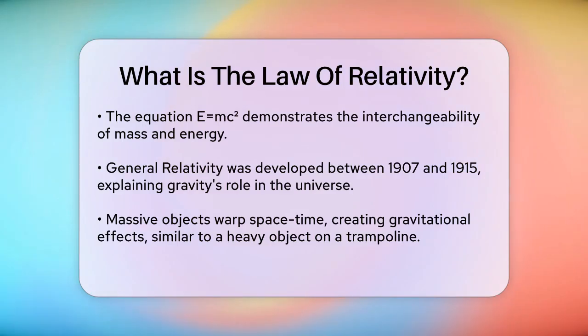This warping of spacetime affects not just objects, but also light. For example, light bends around massive objects, a phenomenon known as gravitational lensing.